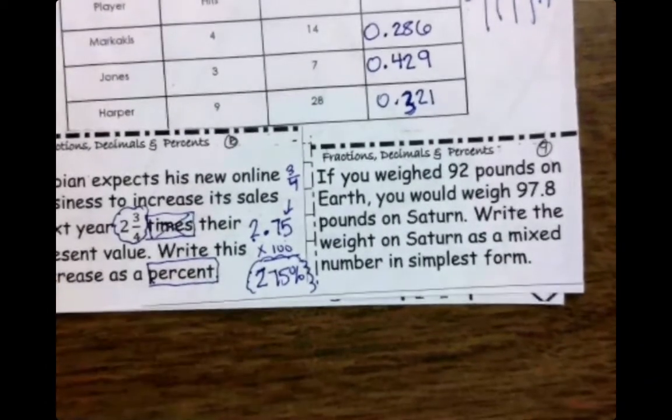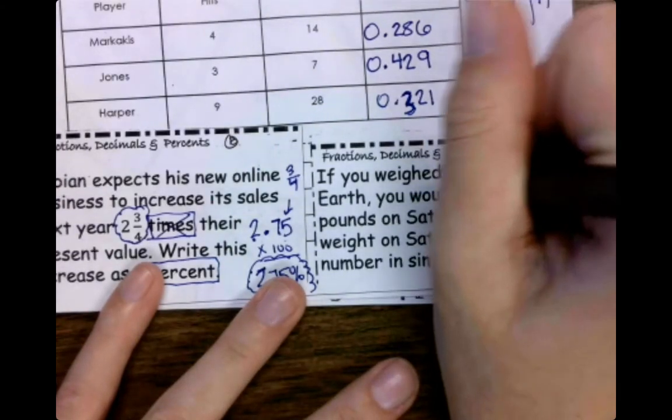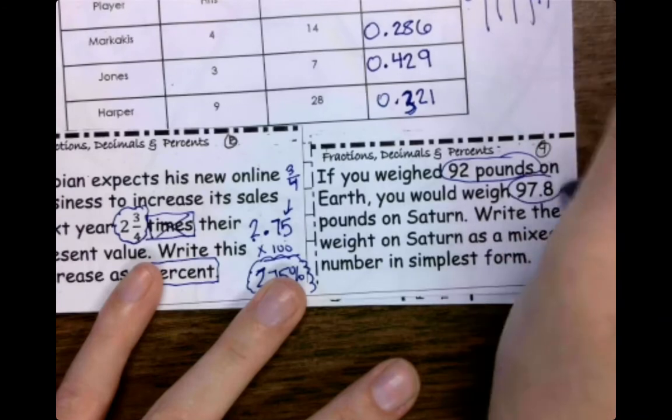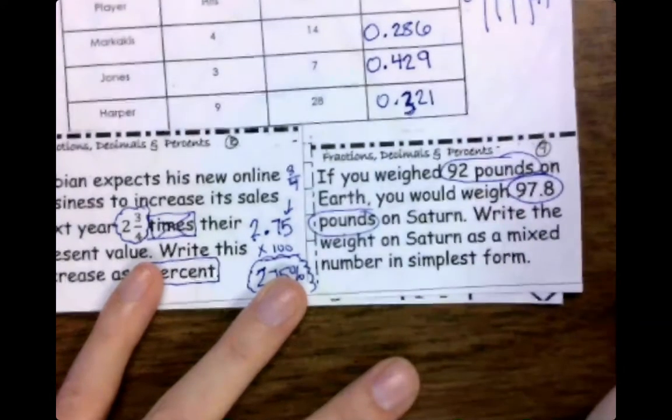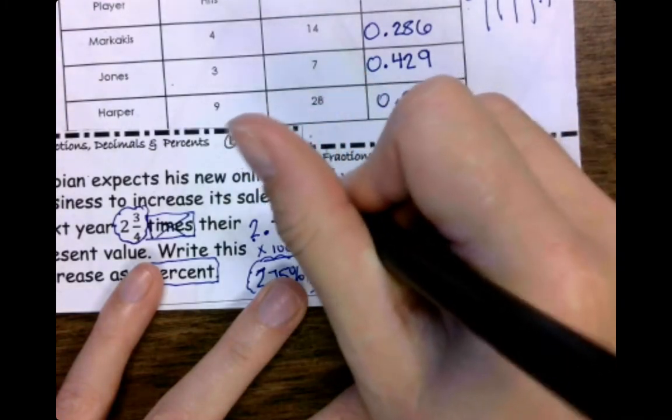If you weighed 92 pounds on Earth, you would weigh 97.8 pounds on Saturn. Write the weight on Saturn as a mixed number in simplest form. So we have pounds, we have pounds. Saturn's important because Earth is important.